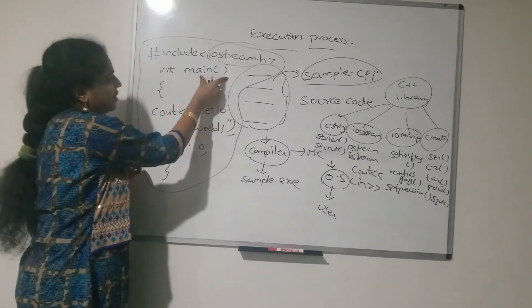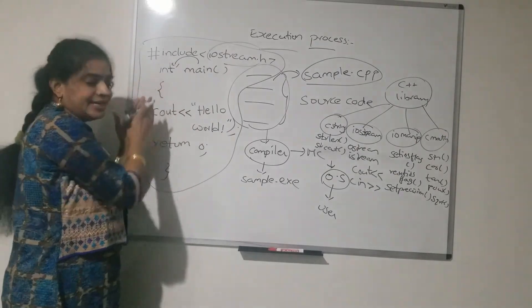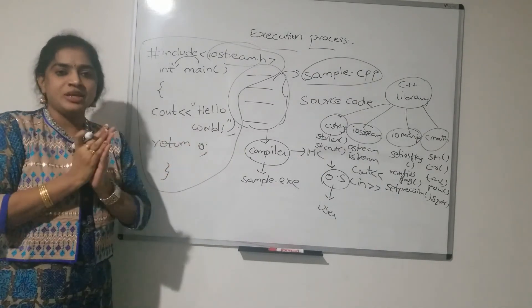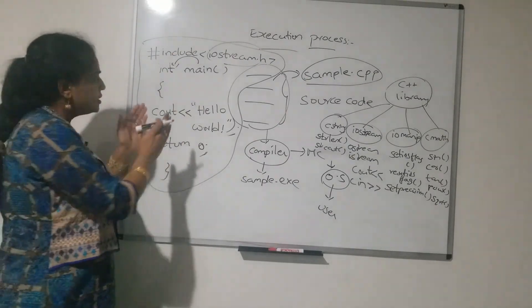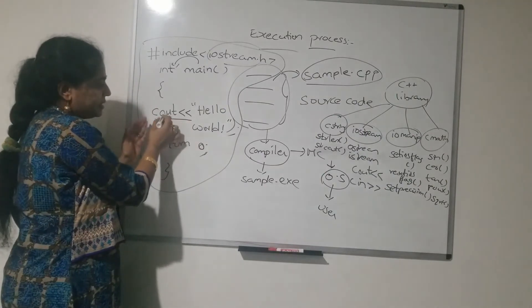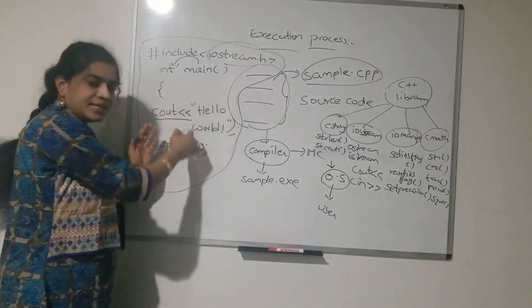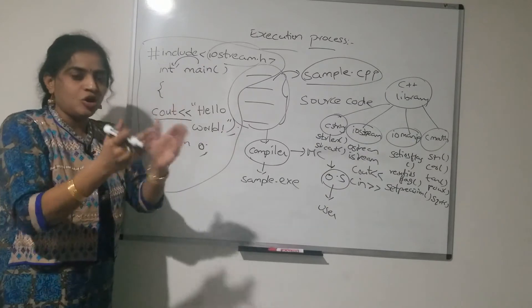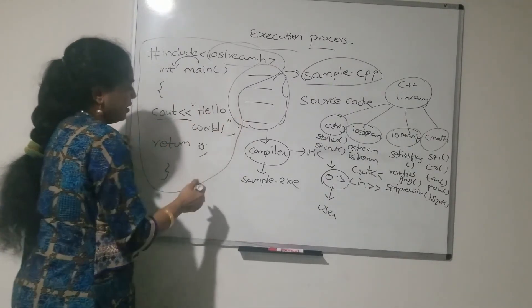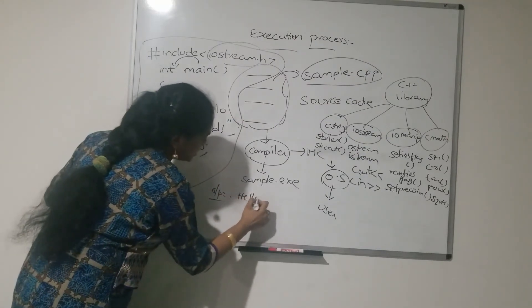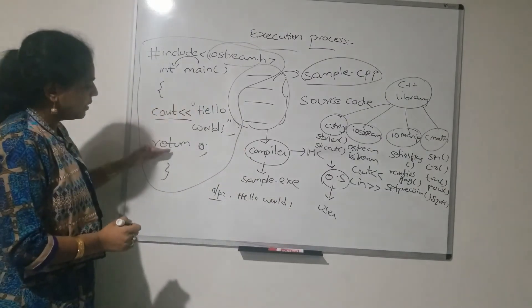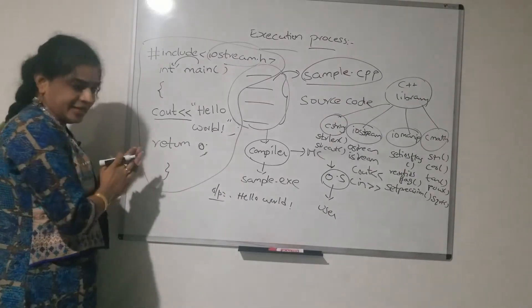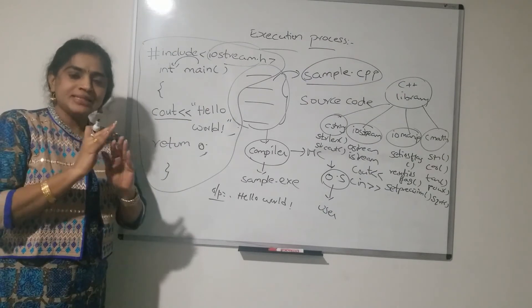Next is int main(). main is a function with return type integer. Since it is an integer return type, it has to return some integer value — that is why we write return 0. Return 0 means this 0 is returned to the operating system, indicating that our program was successfully executed. Within the main function, I write the statement cout, which is used to print the result on the output screen. Here the result is a string — 'Hello World' — and it is printed on the output screen. Then return 0, indicating the program executed successfully, and the closing brace ends the program.